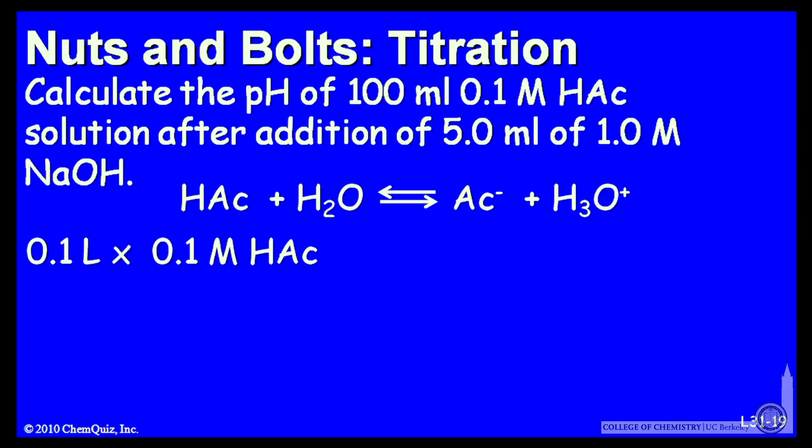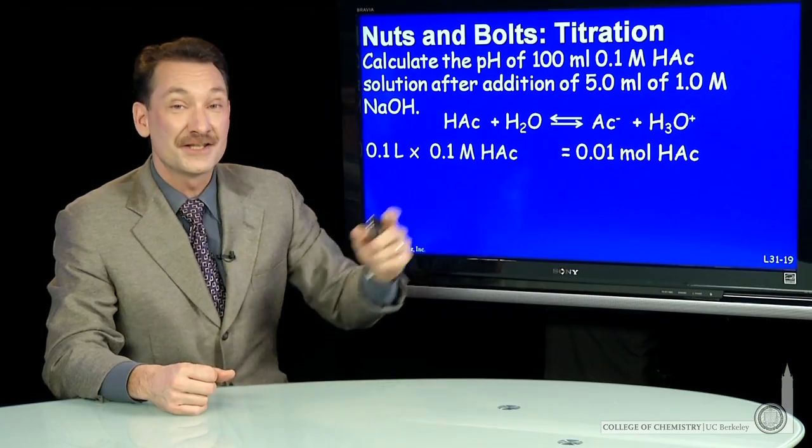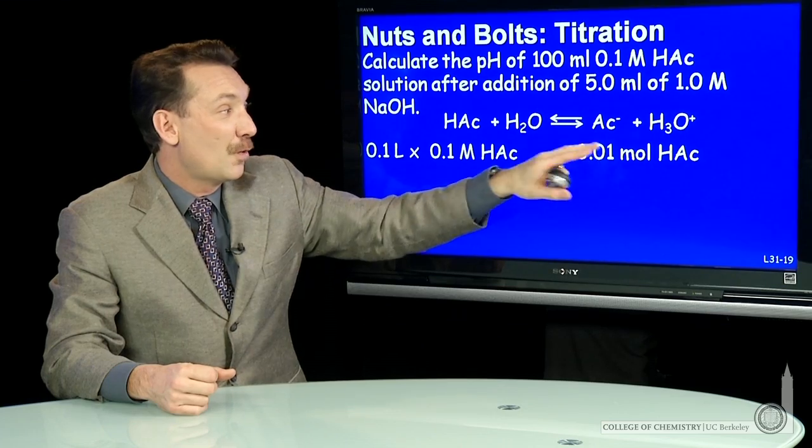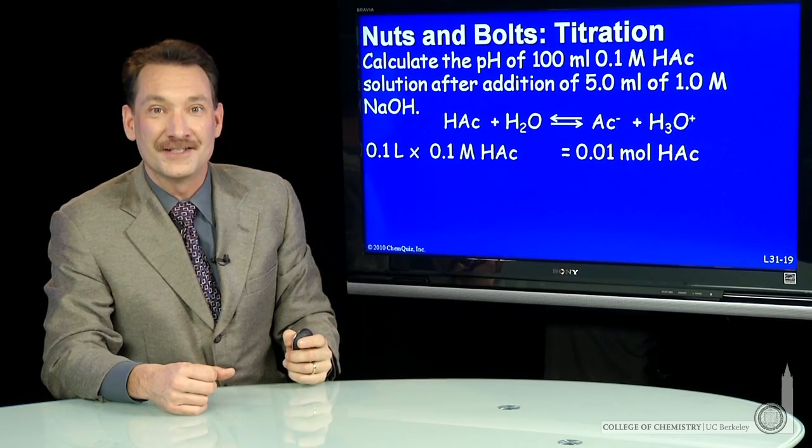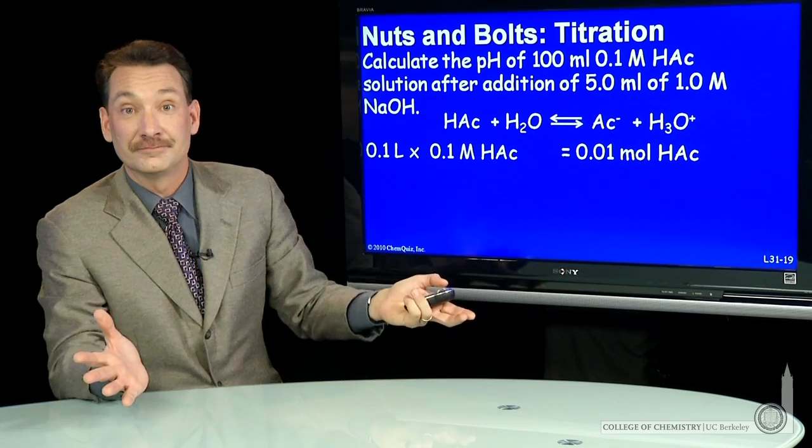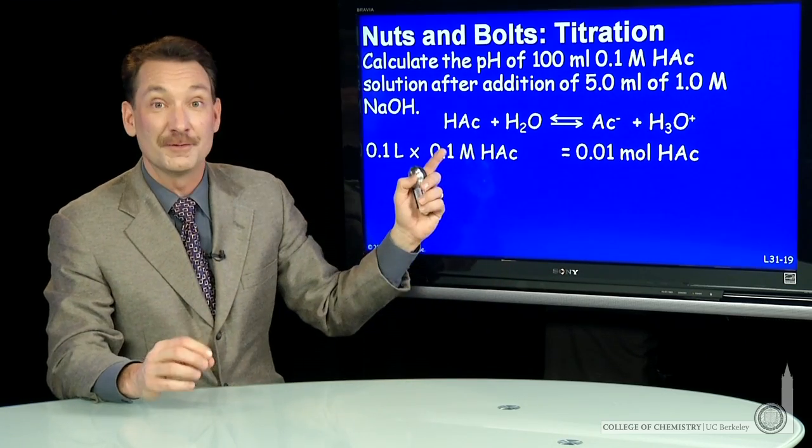So let's do that. I have 100 milliliters, 0.1 liters, of 0.1 molar HAc. How many moles of acetic acid is that? Well, molarity times volume is the number of moles. So 0.01 moles of acetic acid. Now this is assuming no dissociation. That's fine. I can choose any point along my equilibrium to be my starting point.